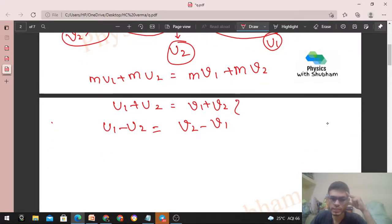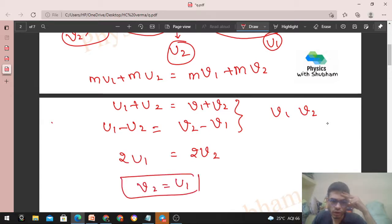So check this out. We have two equations and variables are V1 and V2. If we add the two equations, V1 cancels and we get twice of V2. That equals U2 canceling to get twice of U1. So from here, V2 equals U1. If we put V2 equals U1 in the first equation, V2 cancels with U1, means V1 will be equal to U2.